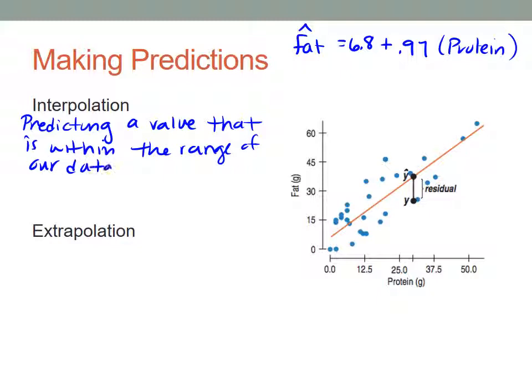In this case it's anything within the data points that we've been given. It looks to here between 0 and 50. If we try to make a prediction between 0 and 50, then we're doing interpolation.